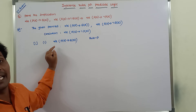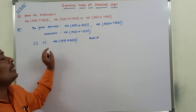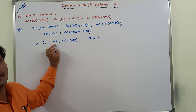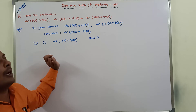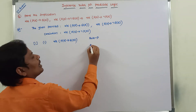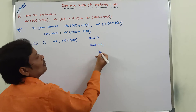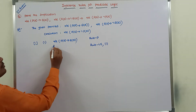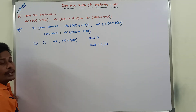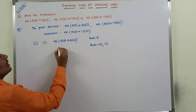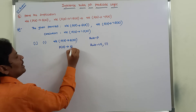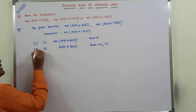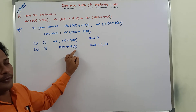First of all, we have to eliminate the universal quantifier, then apply an implication formula. To eliminate the universal quantifier we use Rule US — Universal Specification — applied on the first step. After eliminating the universal quantifier, the variable name is changed, so we get p(a) → q(a). This is the second step in the derivation, obtained from the first step.